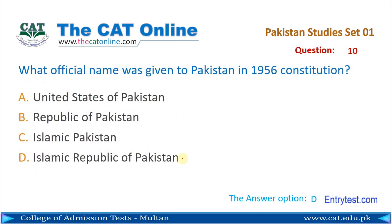Question number 10: What official name was given to Pakistan in the 1956 constitution? 1956 کے آئین میں پاکستان کو کیا نام دیا گیا? The correct answer is D — Islamic Republic of Pakistan.